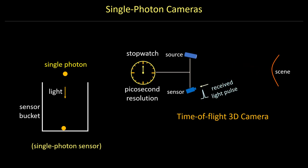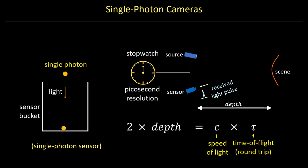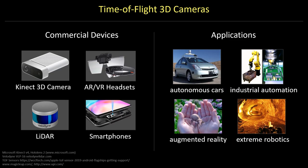Recall that a 3D time of flight camera computes depth of the scene using the speed of light and the round trip time of a laser pulse. Many commercially available 3D imaging devices use this time of flight principle for a wide range of applications. Now, let's see if we can use a single photon sensor with these cameras.